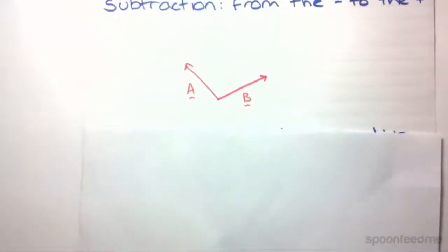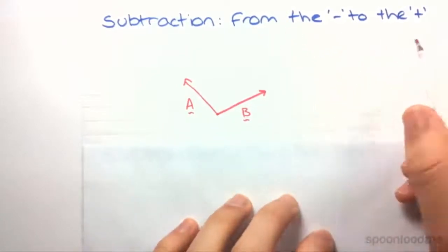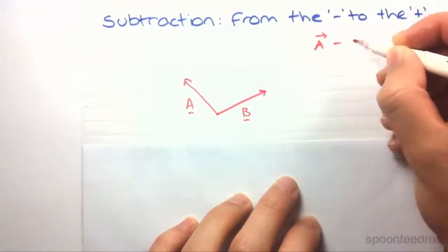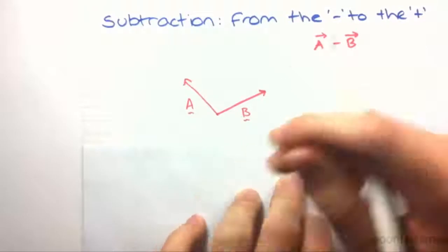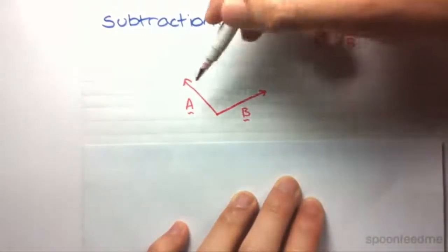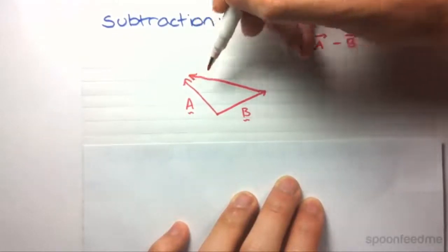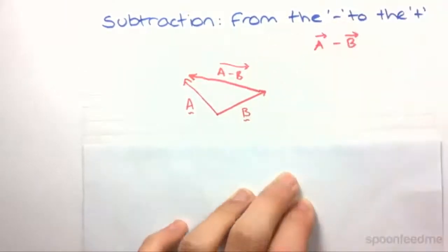Moving on to subtraction, one quick method is to use from the negative to the positive. So if we, for instance, wanted to find the vector A minus B, all we do is we go from the negative to the positive. So the resulting vector, we've got A and B here, is this one. So that is the vector A minus B.